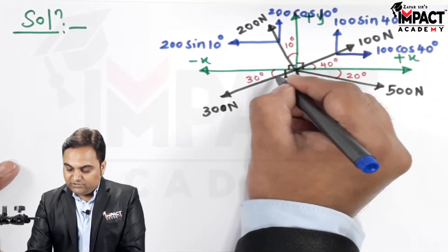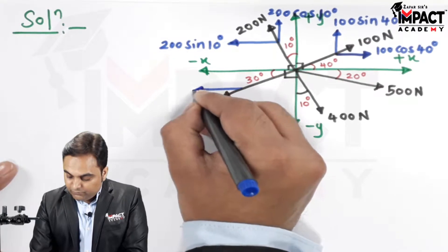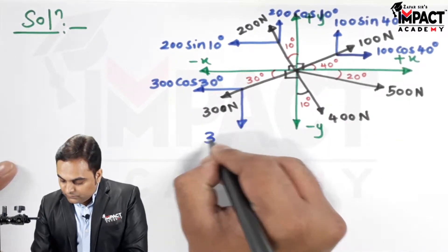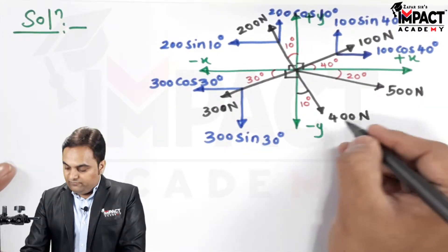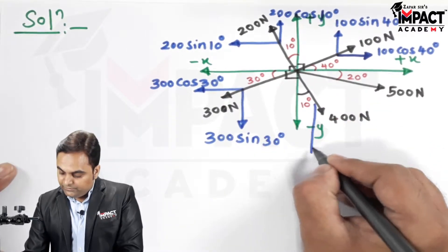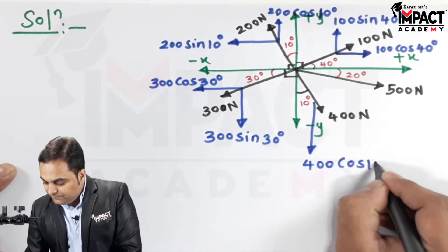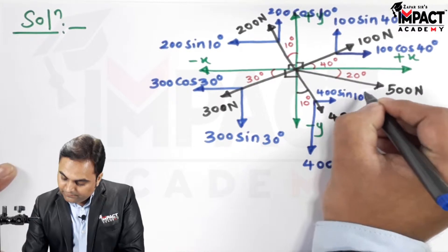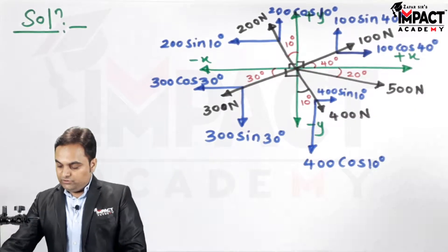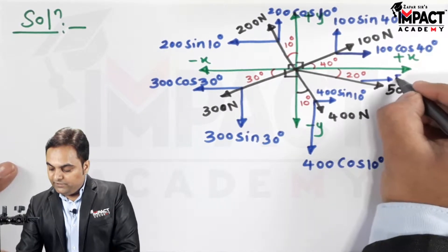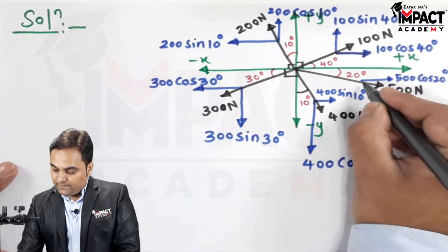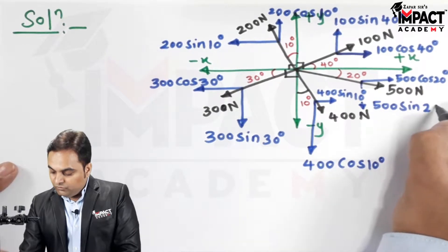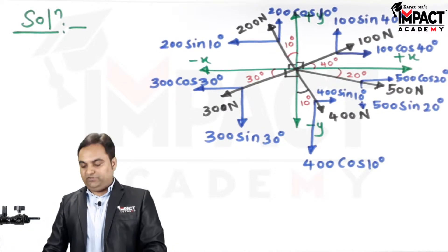For 300 N at 30° from horizontal: horizontal component = 300 cos 30°, vertical component = 300 sin 30°. For 400 N at 10° from vertical: vertical component = 400 cos 10°, horizontal component = 400 sin 10°. For 500 N at 20° from horizontal: horizontal component = 500 cos 20°, vertical component = 500 sin 20°.